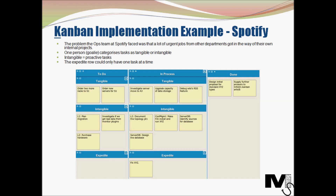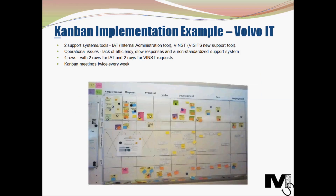The outcome of Spotify's Kanban implementation was that more internal tasks were getting done and overall task lead times went down. The next example is from Volvo IT in 2013 — the internal IT services and maintenance division for the Volvo Group. Volvo IT had two systems: IAT (internal administration tool), which catered to all users, and WINST, specifically for IT service users. Having two separate systems resulted in operational issues like lack of efficiency, slow response, and a non-standardized approach to solving problems.